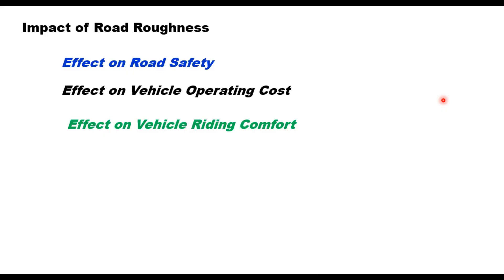The third is the effect on vehicle riding comfort. Rough roads lead to a bumpy and uncomfortable ride, and it becomes very difficult to maintain desired speed on rough roads. Therefore, measurement of roughness on a road is a regular exercise during the maintenance period. It is also used as a parameter of quality control during construction of flexible and rigid pavements.